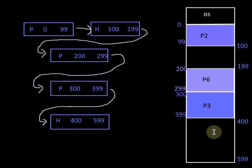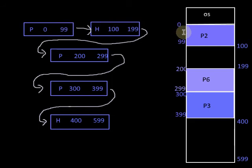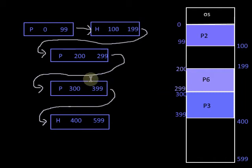What is the advantage of using linked list implementation compared to bitmap implementation? For each partition we are creating a single node. In case of bitmap, for each small allocation unit we have to keep one bit; in this case for each partition we maintain a single node. The number of nodes may vary depending on the number of partitions, but on average the memory space required for the linked list is found to be lesser than the space required for the bitmap. So the first limitation — space — is solved.